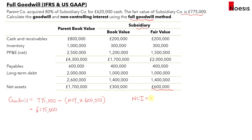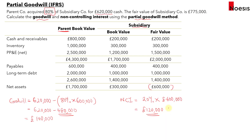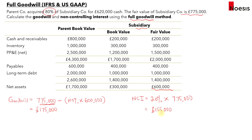For NCI under the full goodwill method, take 20% and multiply by the fair value of the subsidiary — £775,000 — giving NCI of £155,000. Comparing both methods, the partial goodwill method produces a lower goodwill figure and a lower NCI than the full goodwill method respectively.